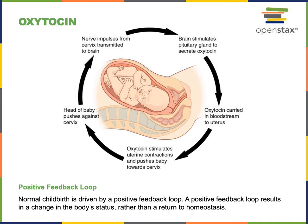Oxytocin stimulates a positive feedback loop during childbirth in response to stretching of the cervix. When the baby's head is pushing against the cervix, stretch receptors relay information through sensory nerves into the hypothalamus in the brain, stimulating the activity of the neurosecretory cells that release oxytocin from the posterior pituitary gland.